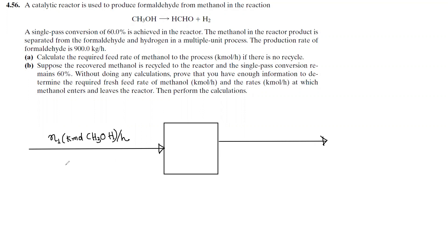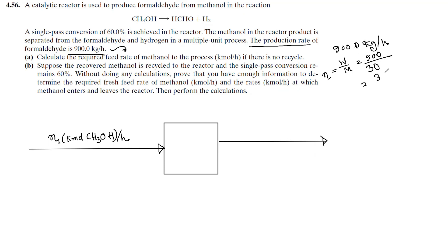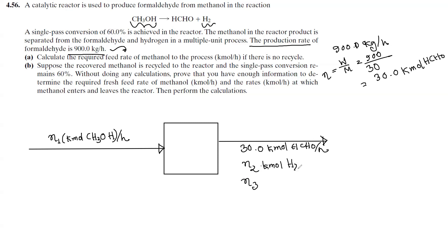The feed is given in kmol CH3OH per hour. This is our N1. Given that the formaldehyde production is 900 kg per hour, we use n = W/M to convert. The molar mass of HCHO is 30, so the production rate is 30 kmol HCHO per hour.